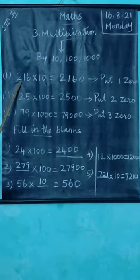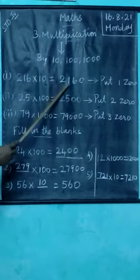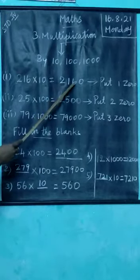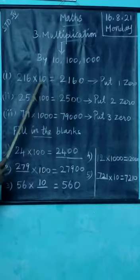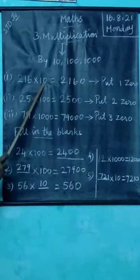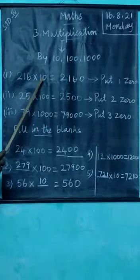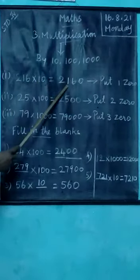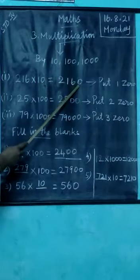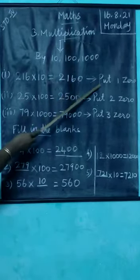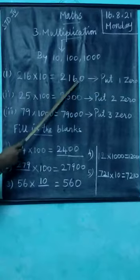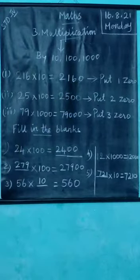Here we write 216, and we put one zero to the right side. We put one zero because the number is multiplied by 10. Put one zero to the right of the number. So 216 × 10 = 2160.